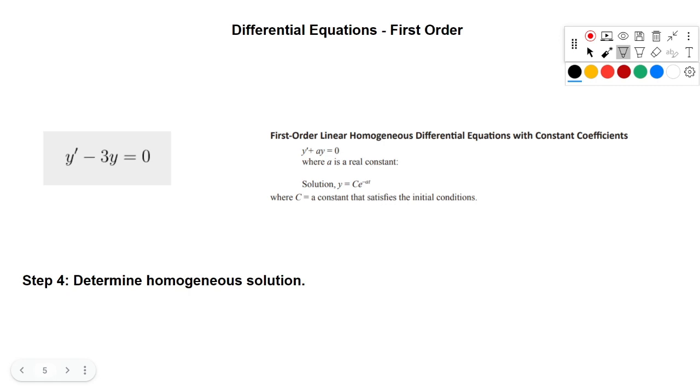Now that we have that correct, we can go right to the solution format. That's given here in the handbook. It's quite simple. C is our constant, and we're going e to the negative at. If we do a comparison, we can see that our a term is this negative 3. So negative a will give us 3t. So now we have the format of our solution for our homogeneous equation.